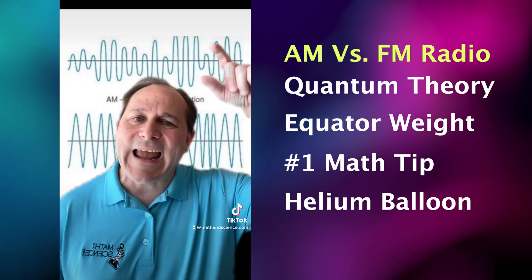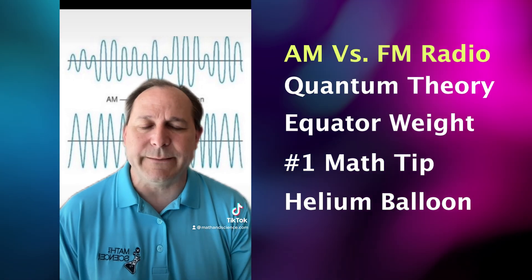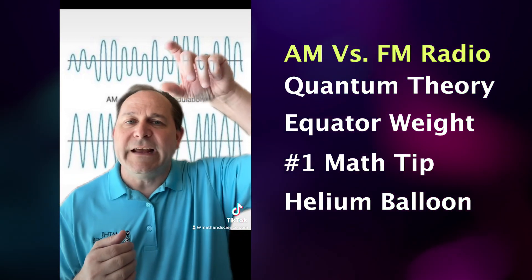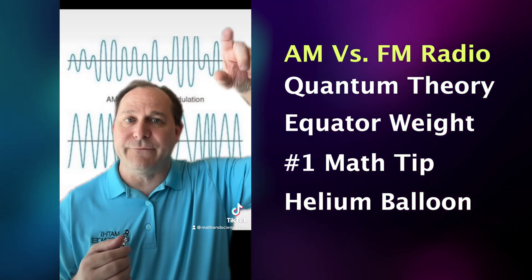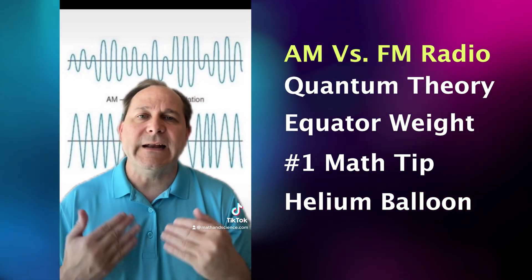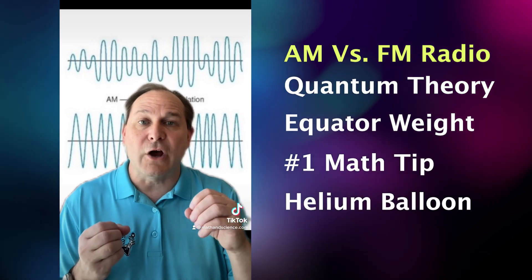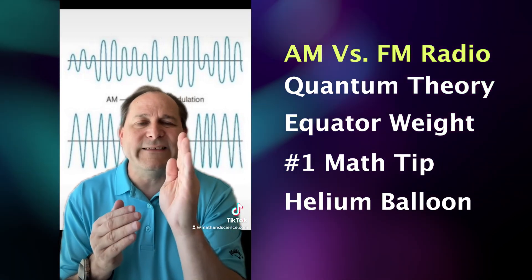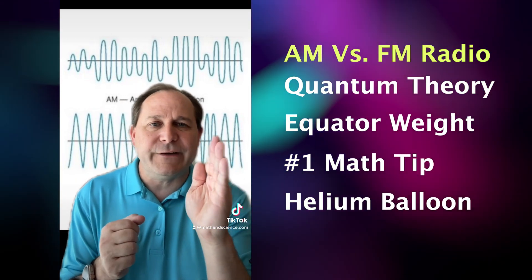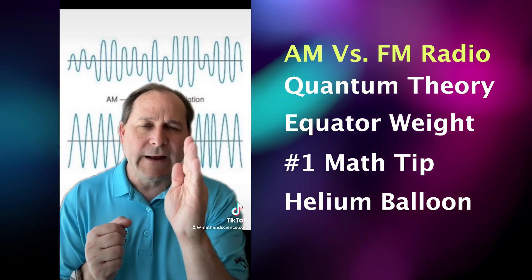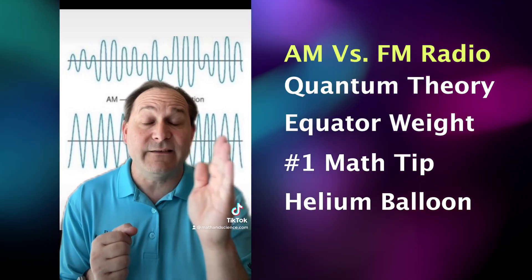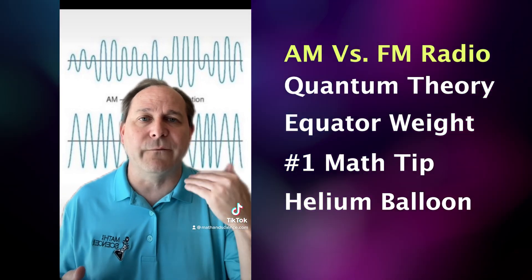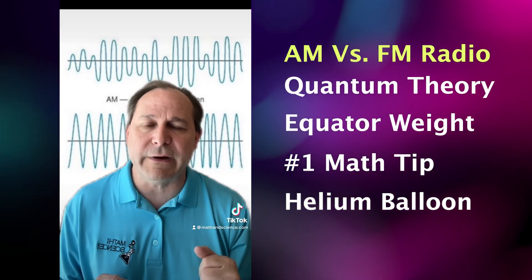So in the AM case, when I talk louder or quieter, it changes the height of the wave. But in FM, as I talk louder or quieter, it slightly shifts the frequency in time, in lockstep with the actual voice you're trying to transmit. And that's how the information is carried differently.